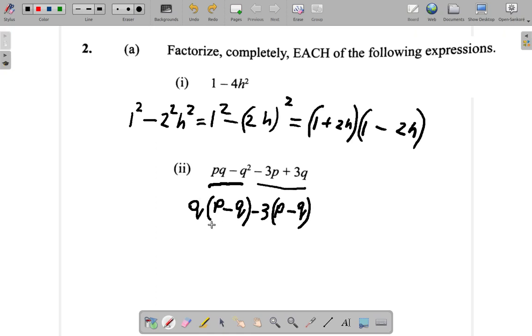Now the thing is, you have an expression here where p minus q is a common factor. You have q times p minus q minus 3 times p minus q. The p minus q is a common factor.